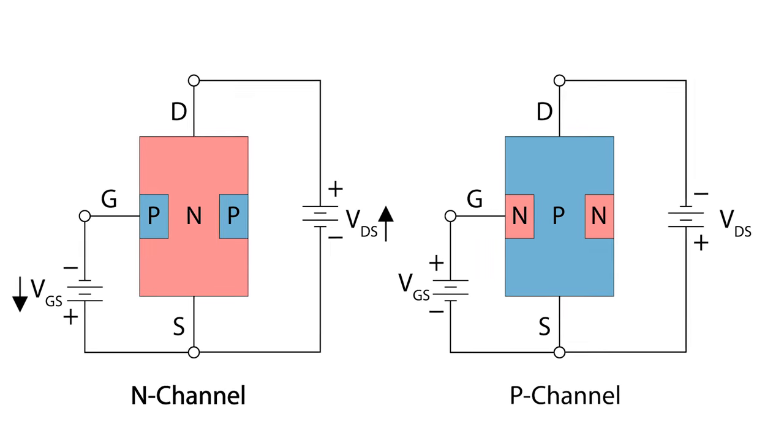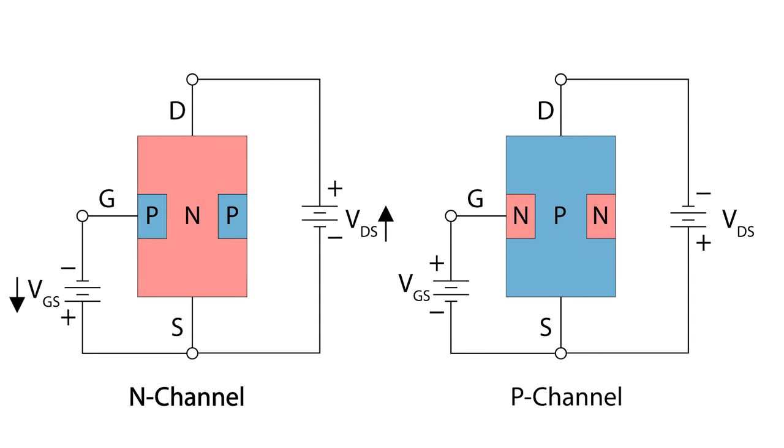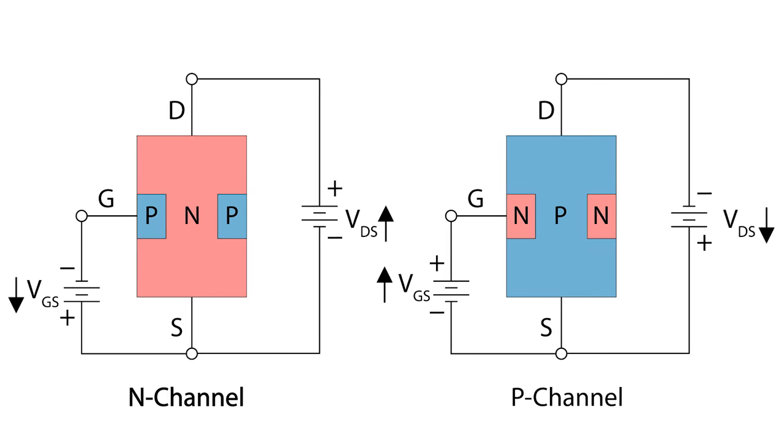N-channel JFETs are used far more commonly than P-channel JFETs, but they effectively work the same way, simply with a reversed polarity. In a P-channel JFET, the gate would be connected to positive rather than negative. This also means that the gate source voltage has to be higher relative to the drain source voltage, rather than lower.